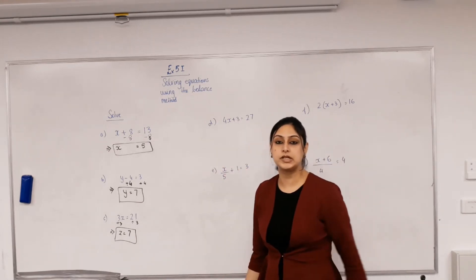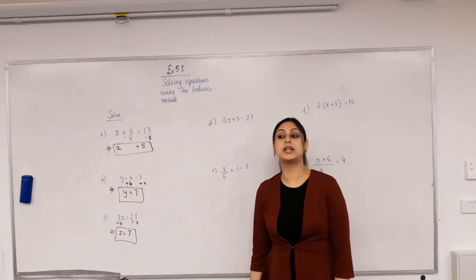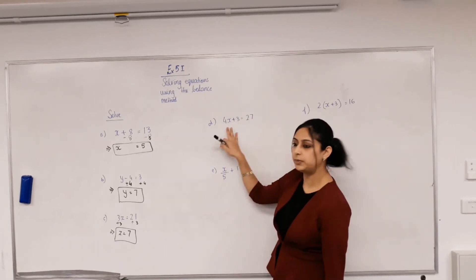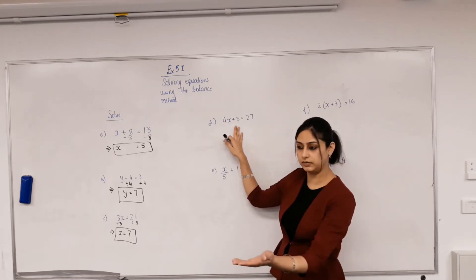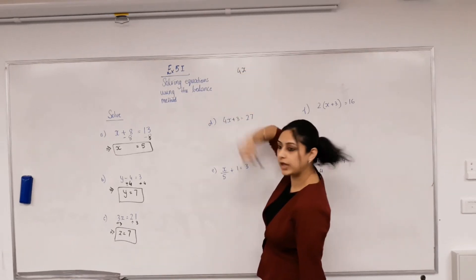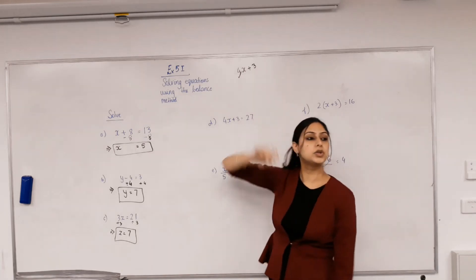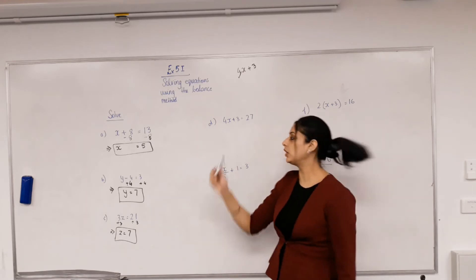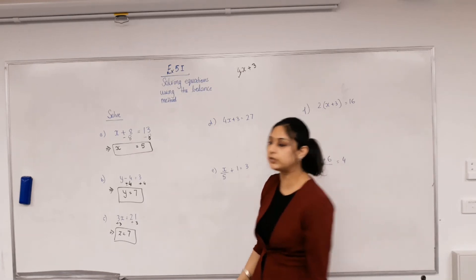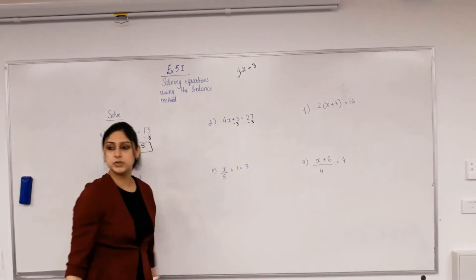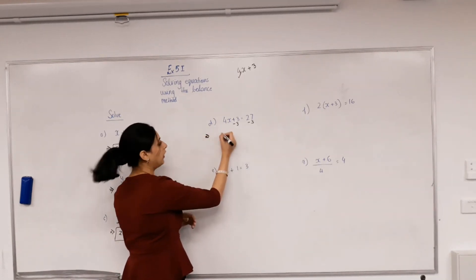These ones have more than one operation: 4x plus 3. How do we decide which one to undo first? We do inverse operations in reverse order. To build 4x + 3, what would you do to x first - times or add? Times. So 4 was multiplied to x first, then 3 was added. So you get rid of the 3 first. Plus 3 - inverse is take away 3 - take away 3 on both sides.